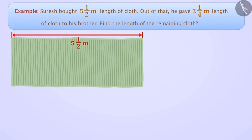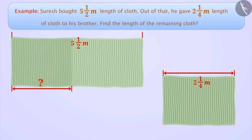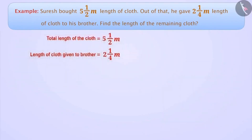Suresh bought 5.5 meters of cloth. Of that, he gave 2.25 meters to his brother. The total length purchased is 5.5 meters, and 2.25 meters was given away. Therefore, the length of the remaining cloth can be determined by subtracting: 5.5 minus 2.25. To subtract, we write both mixed rational numbers in improper form.